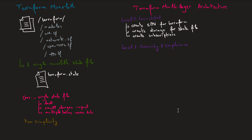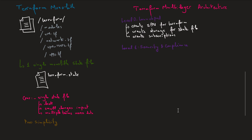Then comes level one, where we provision security and compliance. This should be managed by the team that manages security in our organization. Here we provision RBAC roles and attribute those roles to the different teams. Then we manage monitoring for our infrastructure and application — maybe creating a Log Analytics instance and configuring Azure Monitor. Then we create shared services, like the hub network.